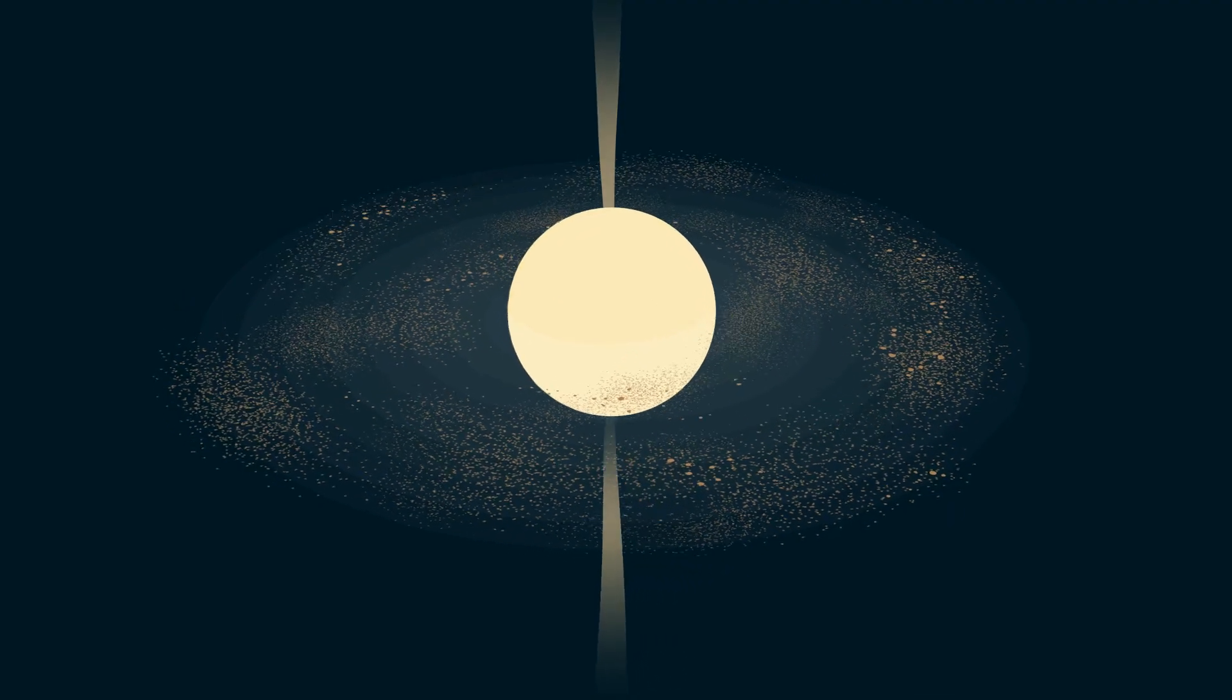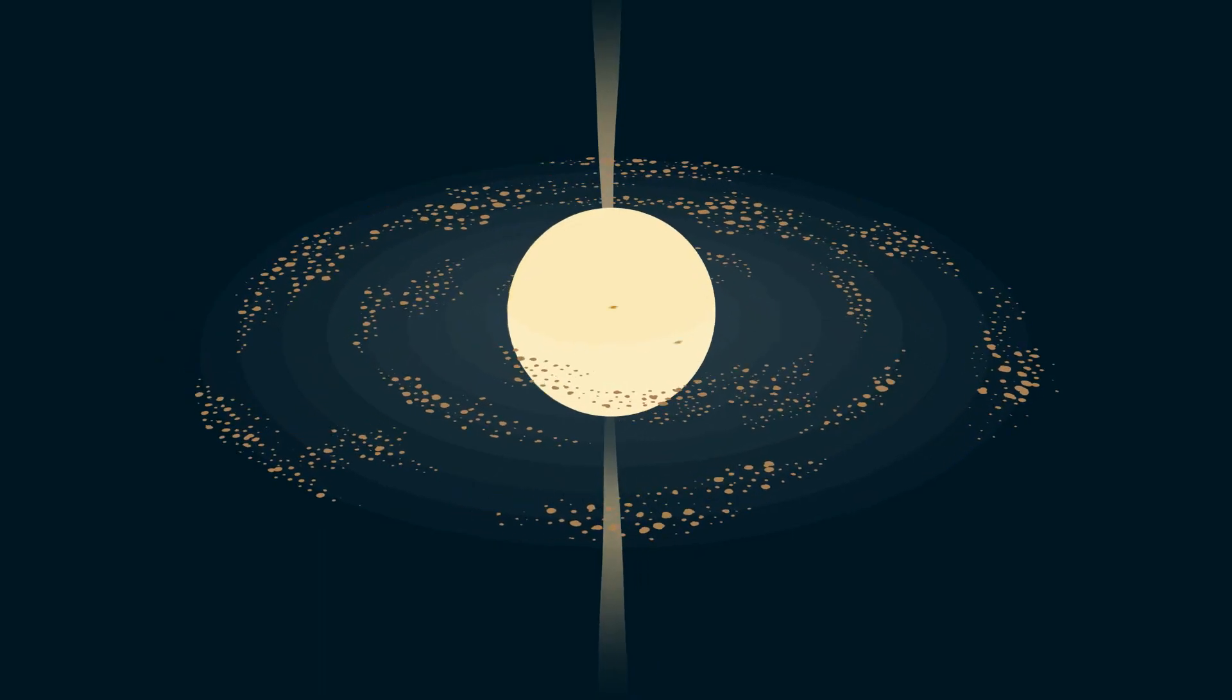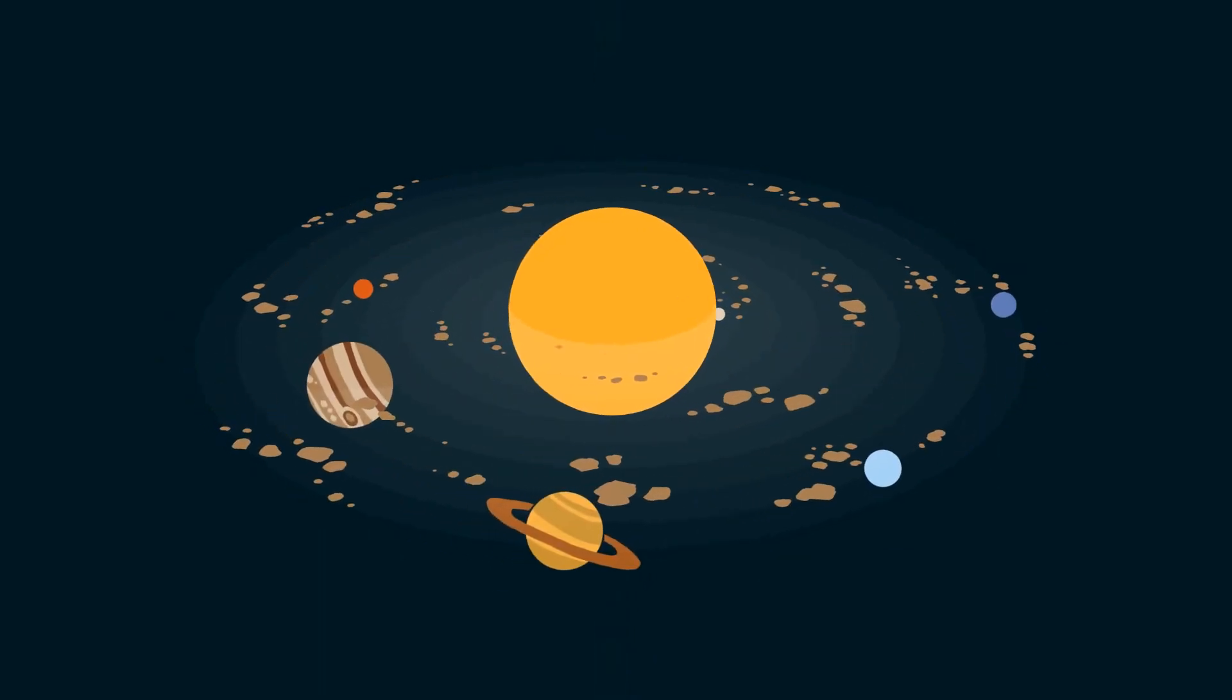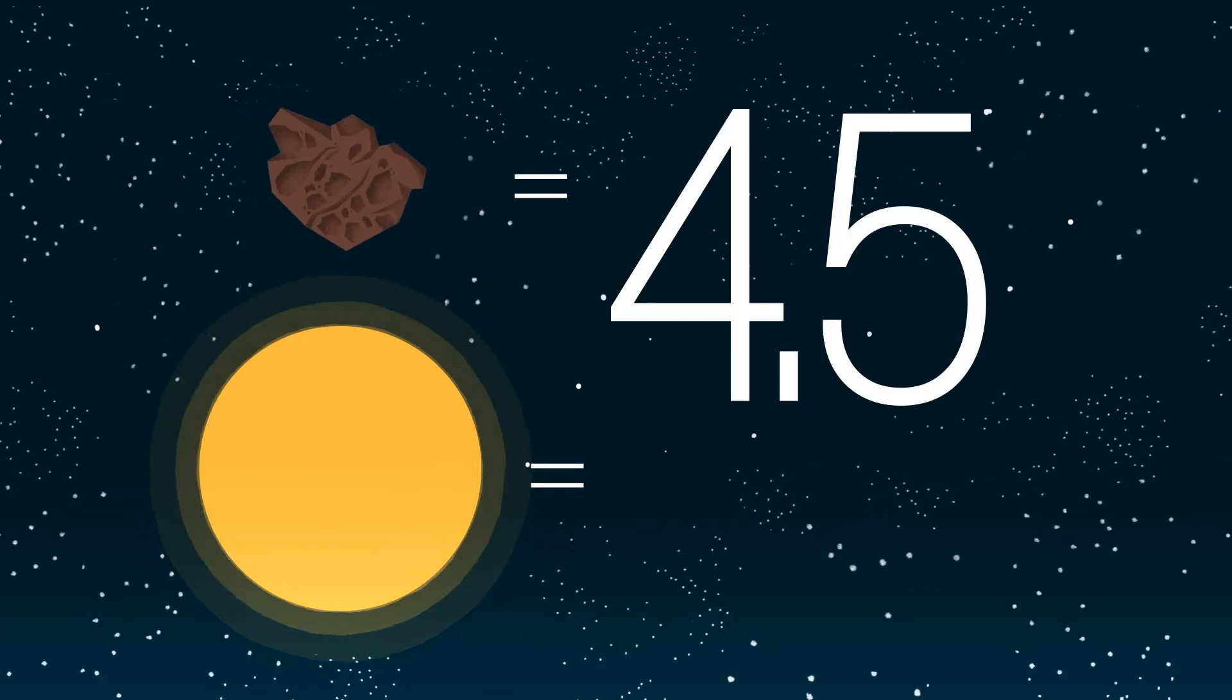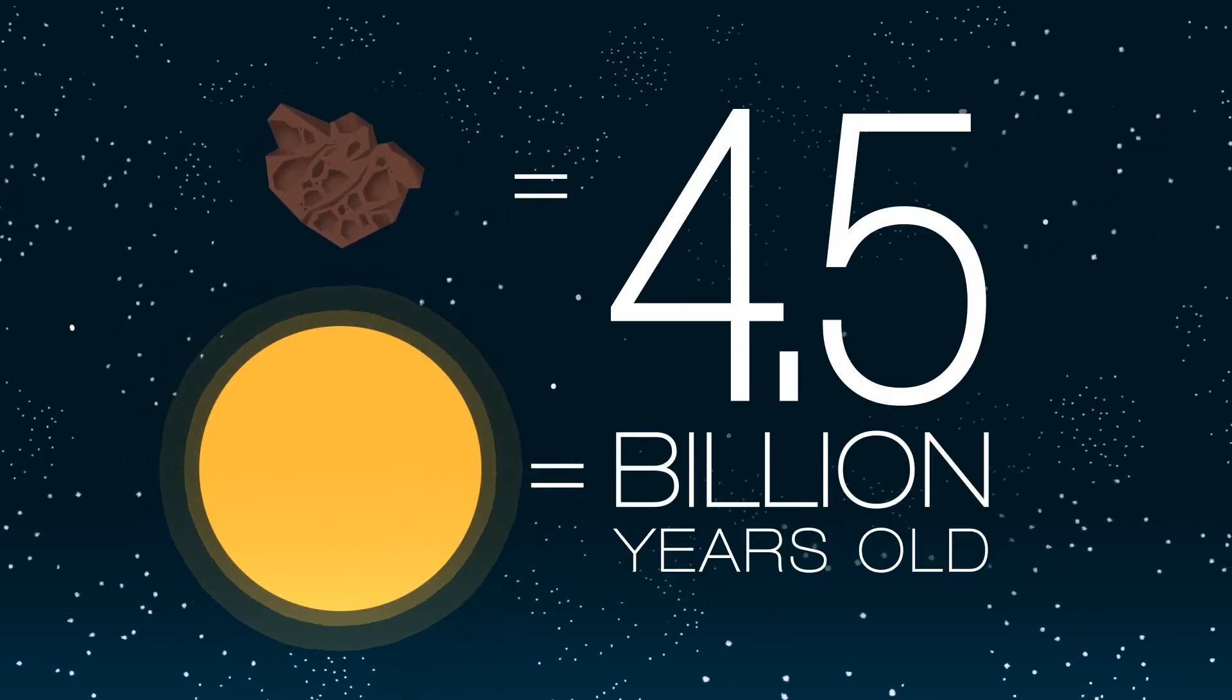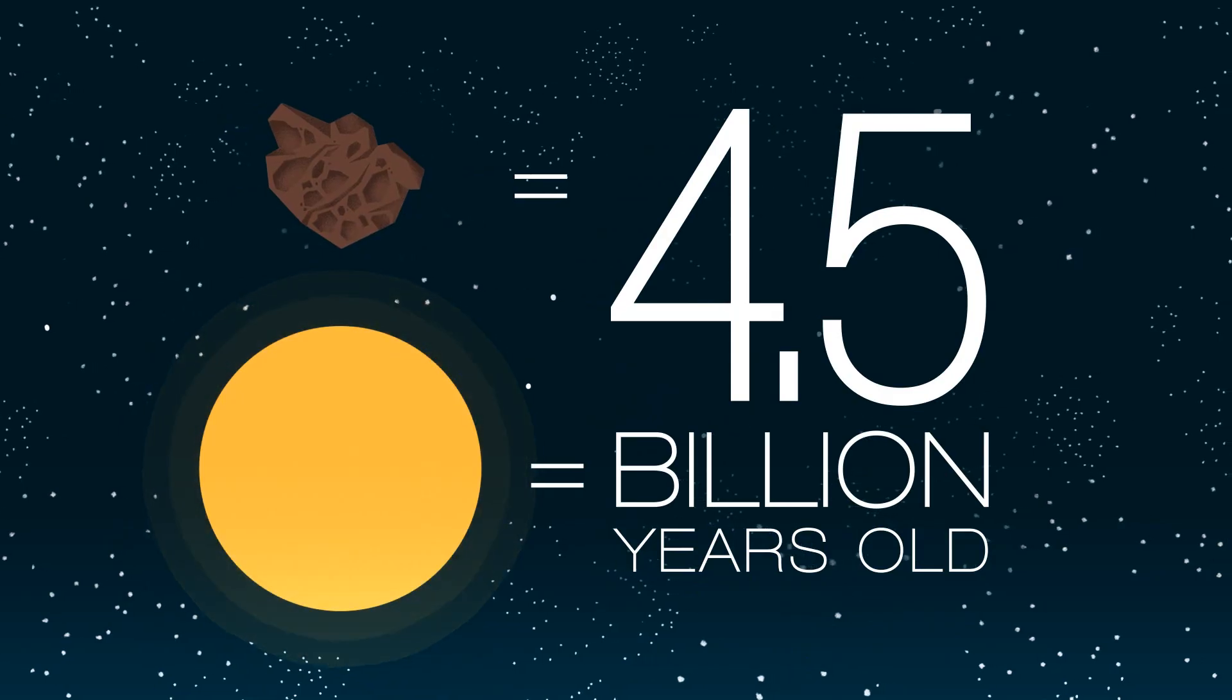Well, the Earth, the planets, comets and moons all formed at the same time as the Sun. So, space rock rubidium tells us the Sun is four and a half billion years old. But what does this number mean?